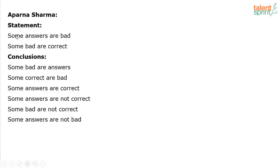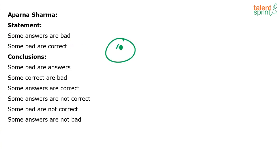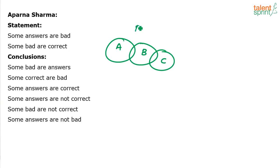A question from syllogisms. We have got only two statements with six conclusions. Two statements and six conclusions, so let's try it out. Some answers are bad, some bad are correct. Draw the basic diagram. Some answers are bad and some bad are correct — that's the basic diagram.